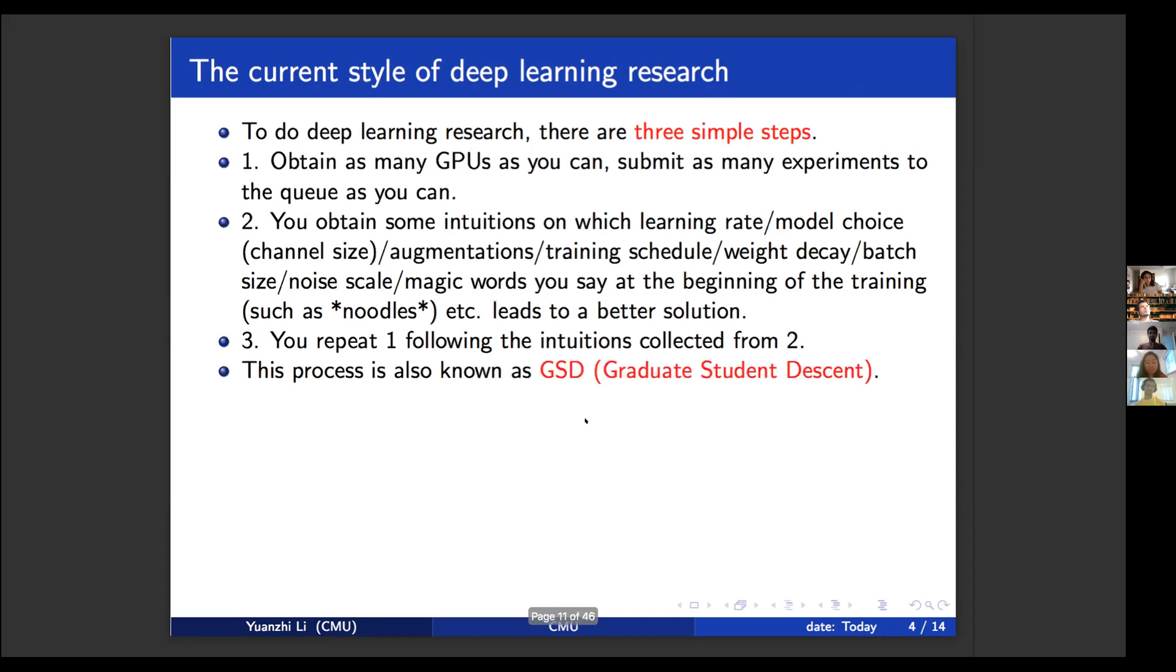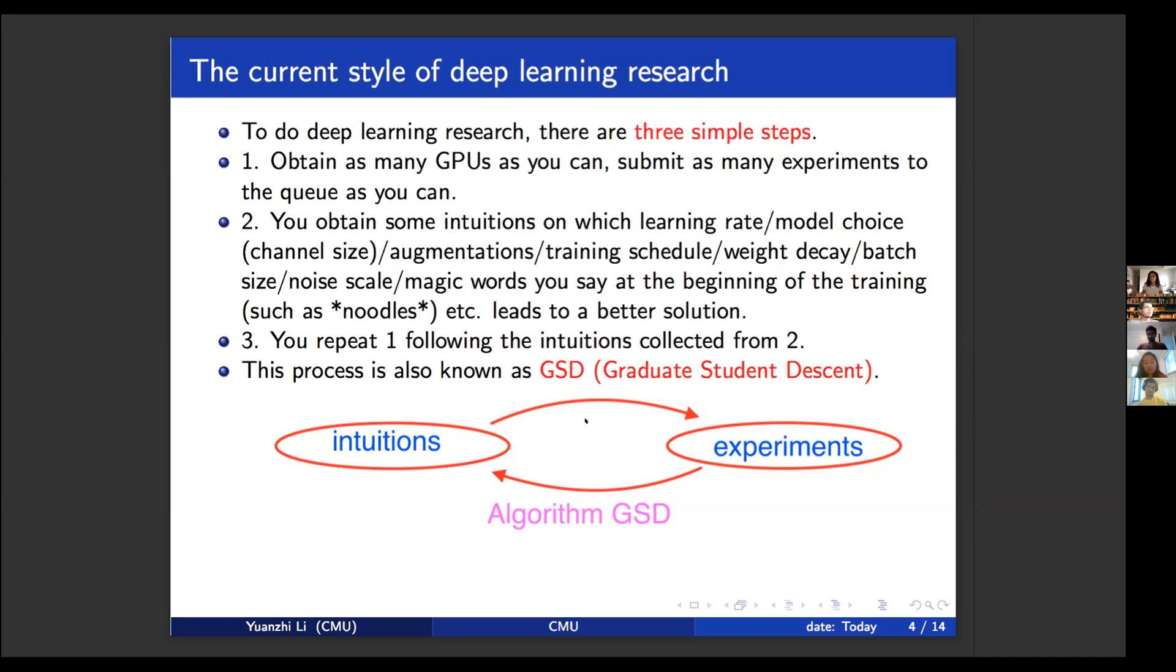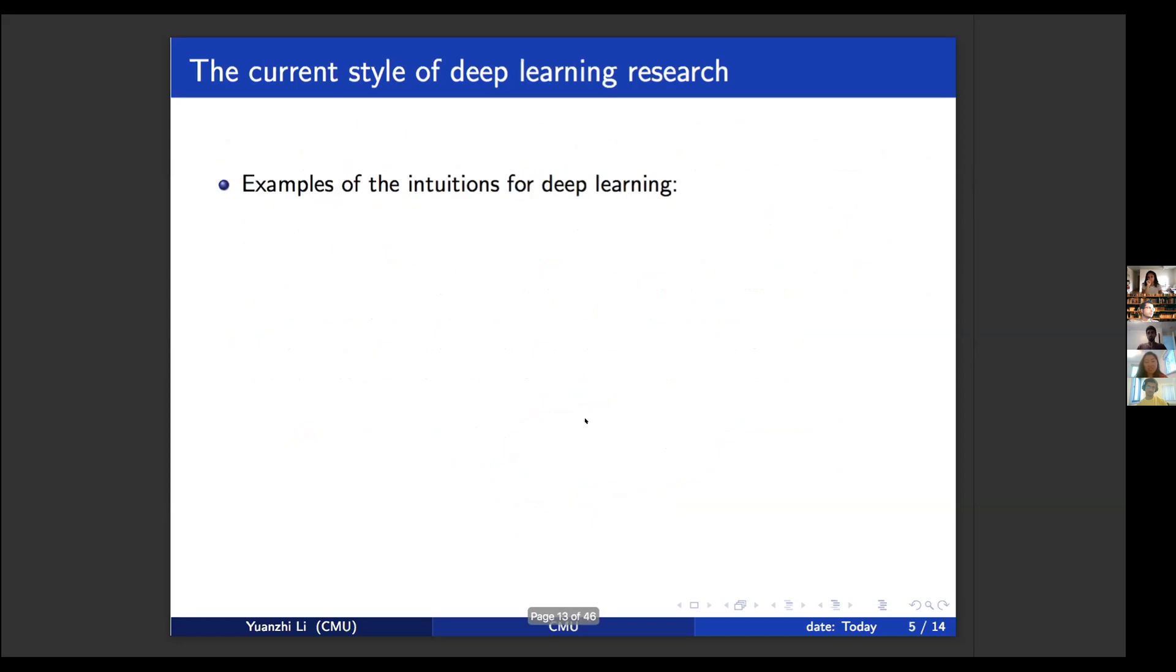So these are the three steps and this process is also known as GISD, which is a short version for graduate student design. So you'll have these intuitions and the experiments, then you interact with that and try many different trials and eventually hopefully you improve the final performance of your deep learning model by like 0.01%. So this is a typical deep learning process that a graduate student might take.